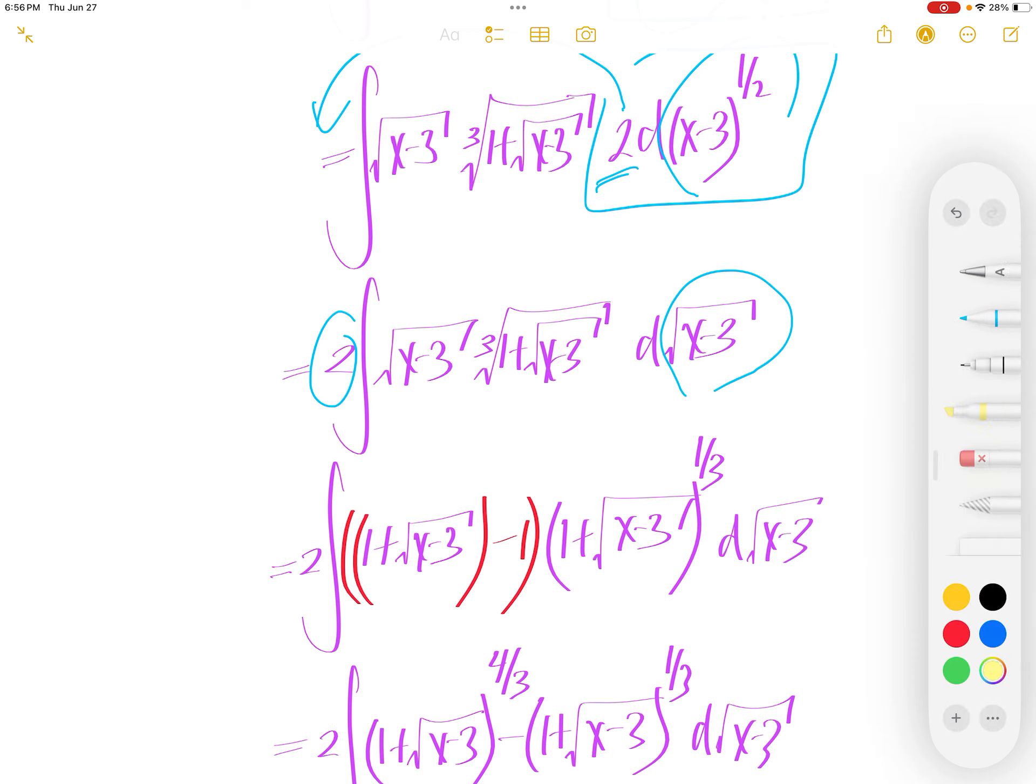Now, let us rephrase this as 1 plus square root x minus 3 minus 1. So, this is this.